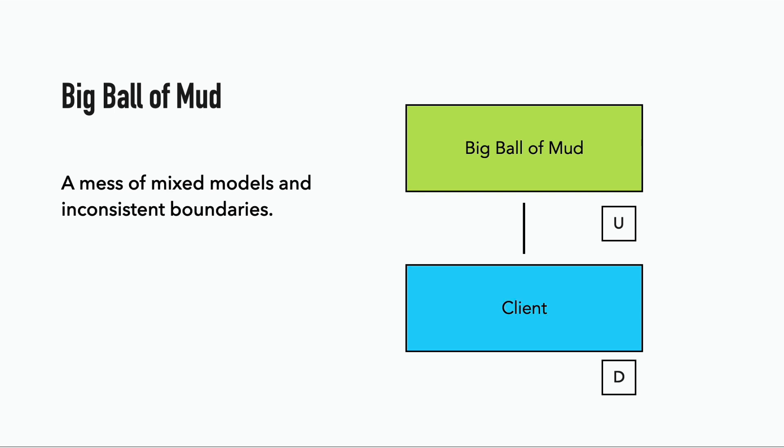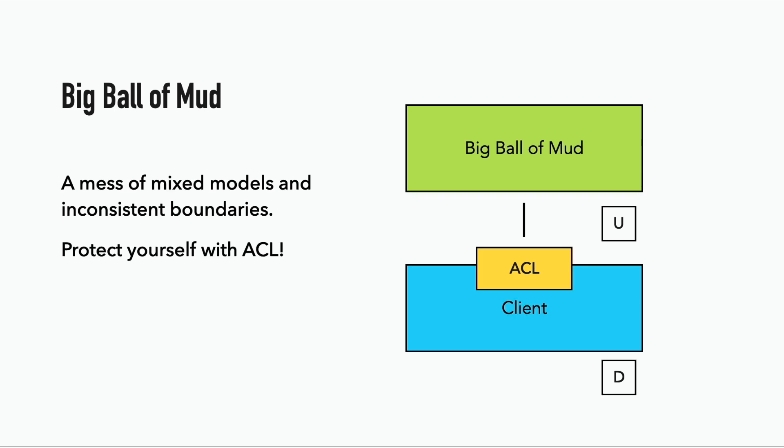And the last pattern is the dreaded big ball of mud, where you have a mess of different models all mixed together, and there are inconsistent boundaries everywhere. To prevent the upstream mess from propagating into your bounded context, an anti-corruption layer is the pattern of choice here.